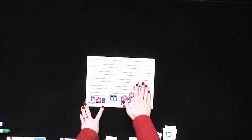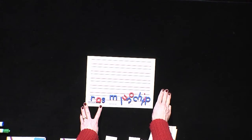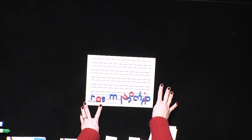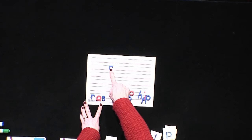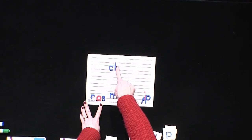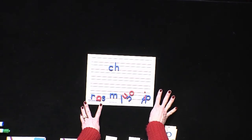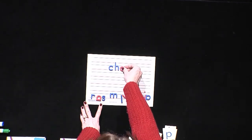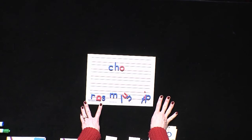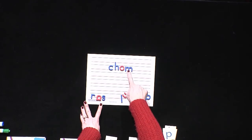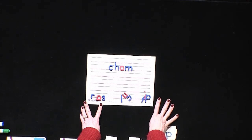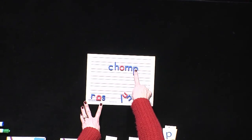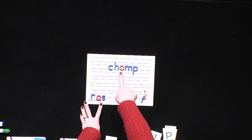All right, let's see if you can help me with the next word. I want to spell the word 'chomp'. First, let's count the sounds: CH-O-M-P — four sounds. What's that first sound we heard in 'chomp'? The CH sound — we make that with C and H. What's the next sound? 'Ah' — made with the letter O. The next sound is 'mm' — M says 'mm'. And the last sound in 'chomp' is P. So 'chomp' is C-H-O-M-P.